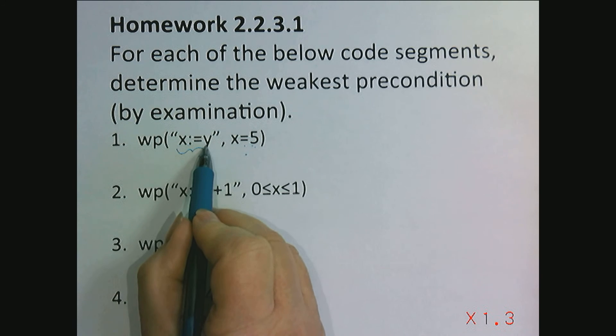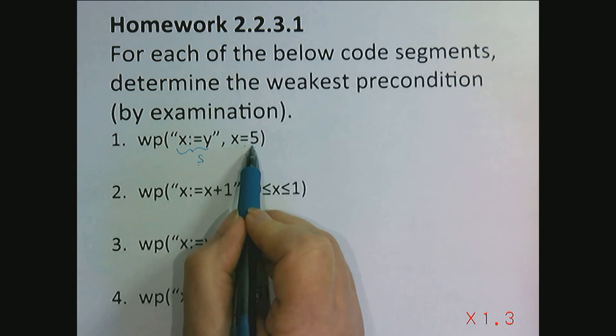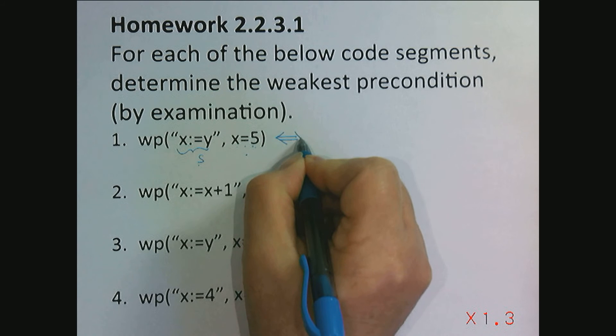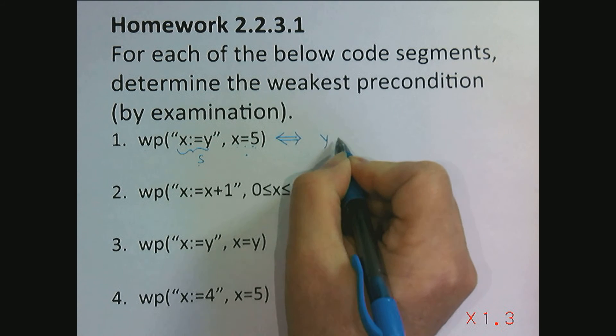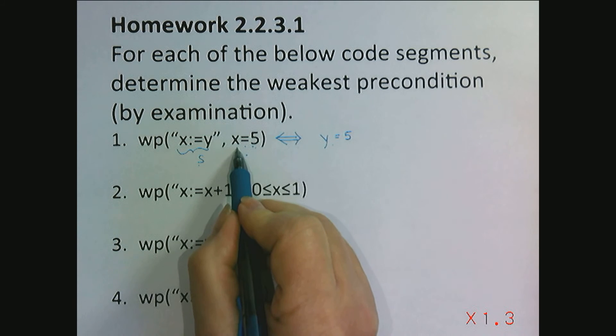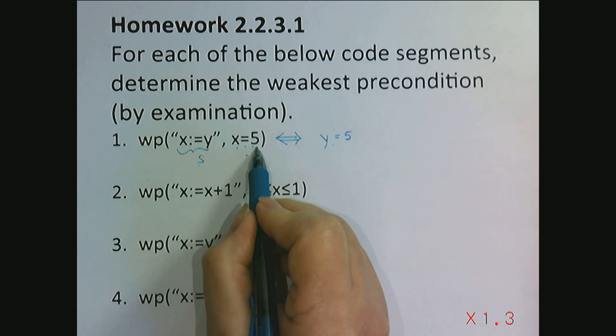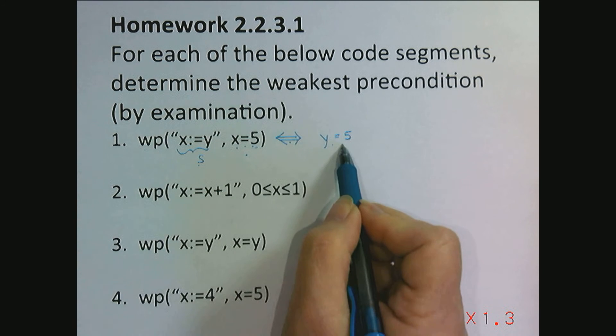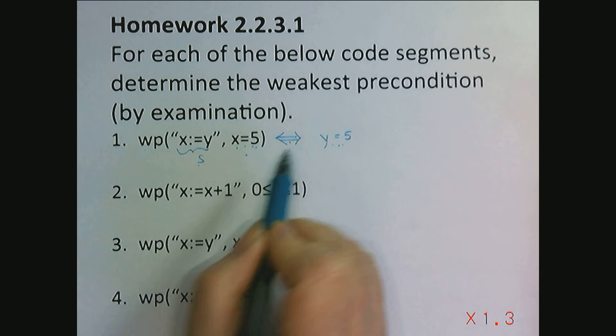Well, if x is y, y had to be 5 for x to be 5. And so the predicate describing this is that y is 5. That's the only way we end up in a state where x is 5. Notice I use equivalence here because weakest precondition does give us a predicate and predicates are equivalent to one another.